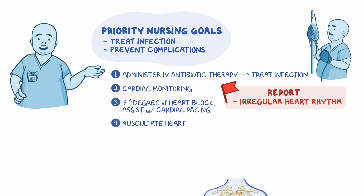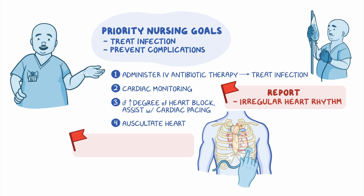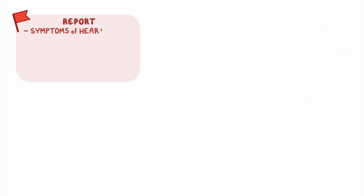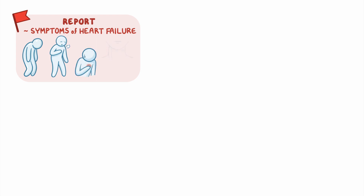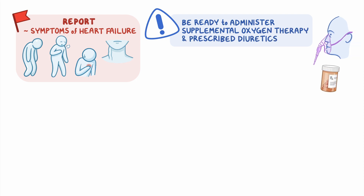Auscultate their heart, starting with the aortic area, then to the pulmonic area, across to the tricuspid area, and finally to the mitral area. If a heart murmur is detected, report your findings to the healthcare provider right away. Additionally, be sure to report if your client develops symptoms of heart failure, such as fatigue, dyspnea, tachycardia, or jugular venous distension, and be ready to administer supplemental oxygen therapy and the prescribed diuretics.